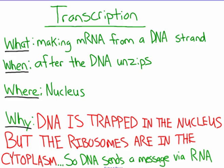The why is crucial: DNA is essentially trapped inside a prison, and that prison is the nucleus — DNA cannot leave the nucleus at all. However, we need to use DNA to make proteins, and ribosomes make proteins in the cytoplasm. So we have a problem: the DNA is trapped in the nucleus, ribosomes make proteins in the cytoplasm, and the DNA cannot get to the ribosomes. That is why transcription is so important — DNA sends a message via RNA, sending a copy of itself out into the cytoplasm.